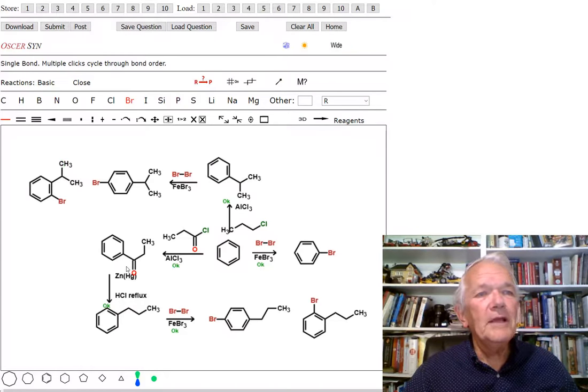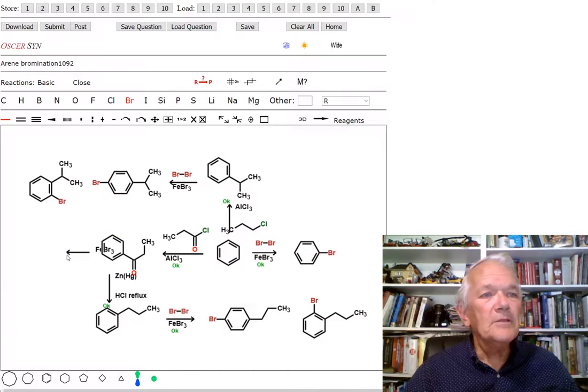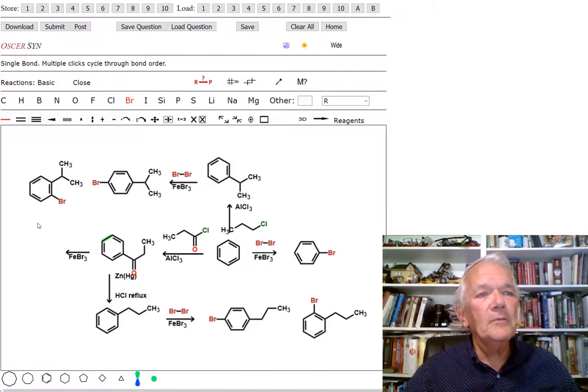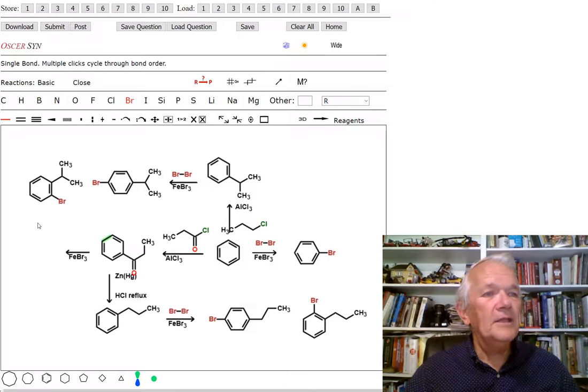Now of course, if you do it down here with the acyl one, though, we're going to get something different. So what are we going to get down here? We do bromination. So because this is a meta director, what are we going to get from here? We better get the meta compound or I've got a lot of explaining to do. He's taking his time. No reaction found. Oh, I didn't put in the bromine. Why didn't you tell me? Silly me. Now let me try it. Poor Oscar. I can't do chemistry without the reagent.